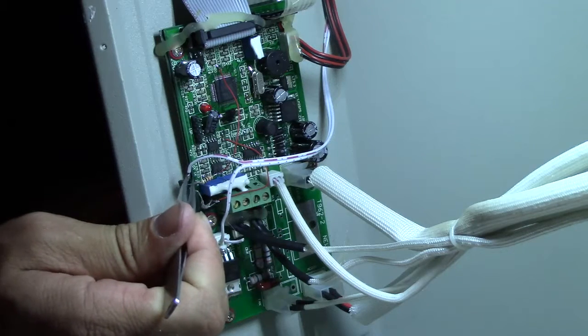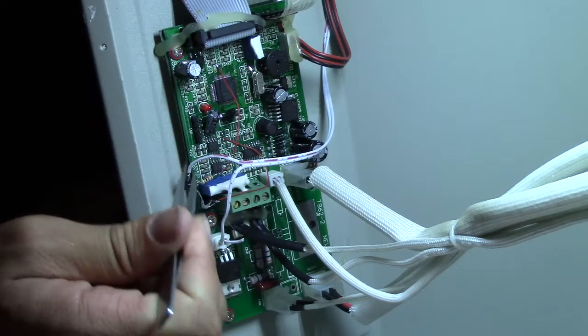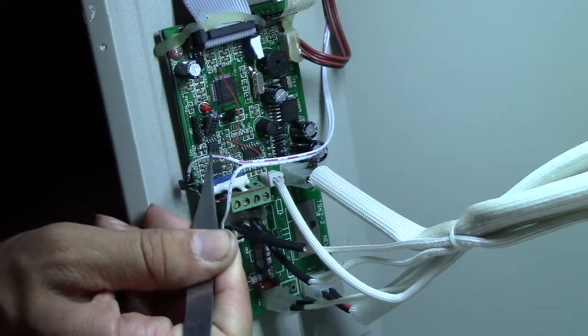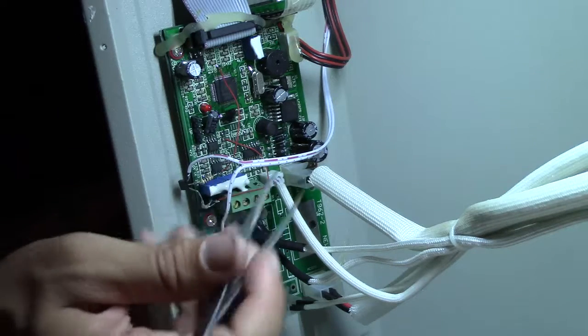And then this one, the drain, goes to the negative of your fan, which is the dashed pink line wire.